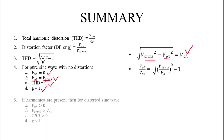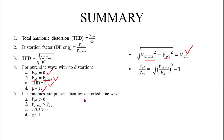Now let's consider another case where harmonics are present in the sine wave. If harmonics are present, we get a distorted output, meaning V₀H > 0. Putting V₀H > 0 into the equation gives V₀RMS > V₀₁. This means that due to harmonics, the output RMS voltage increases.